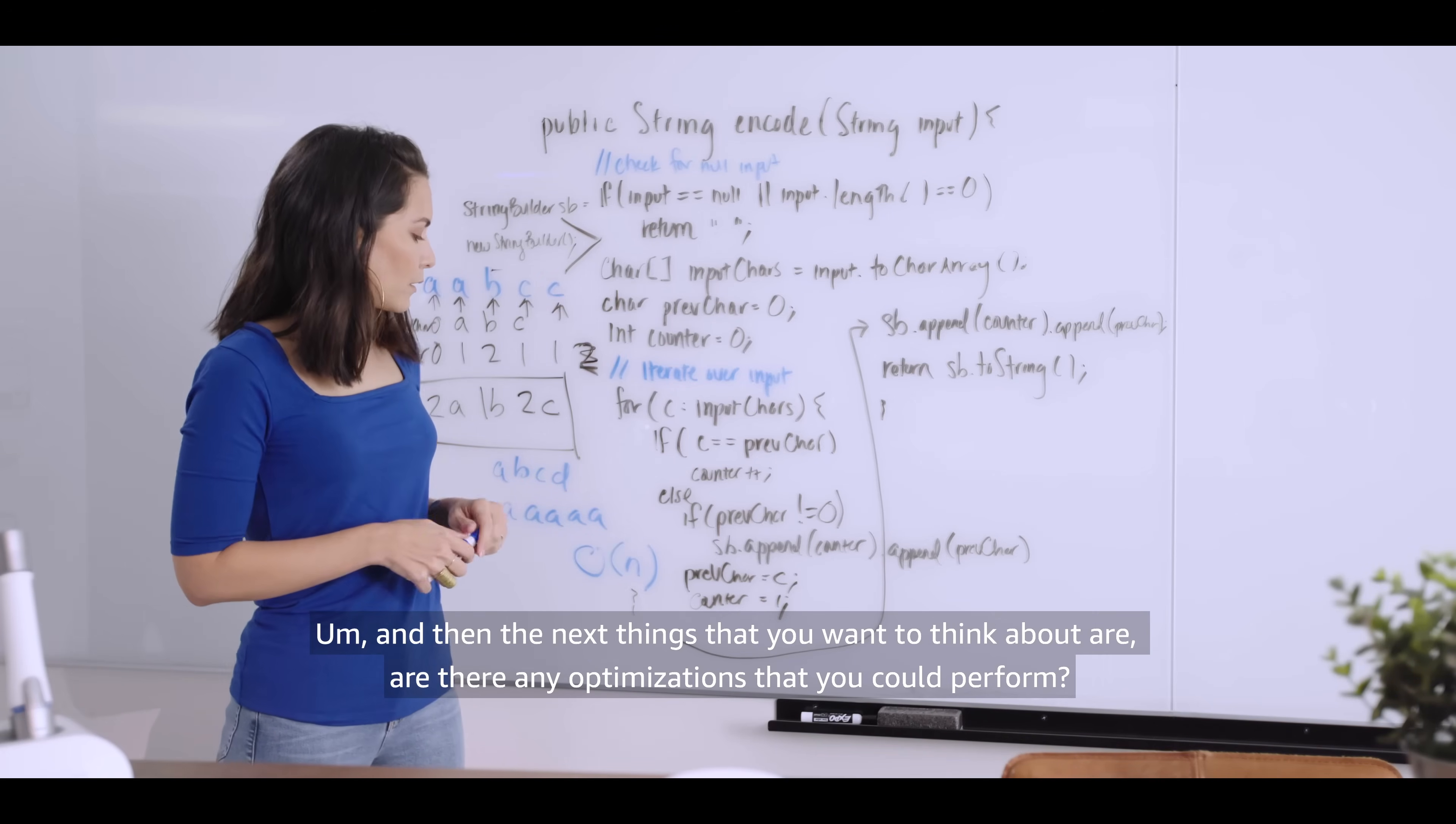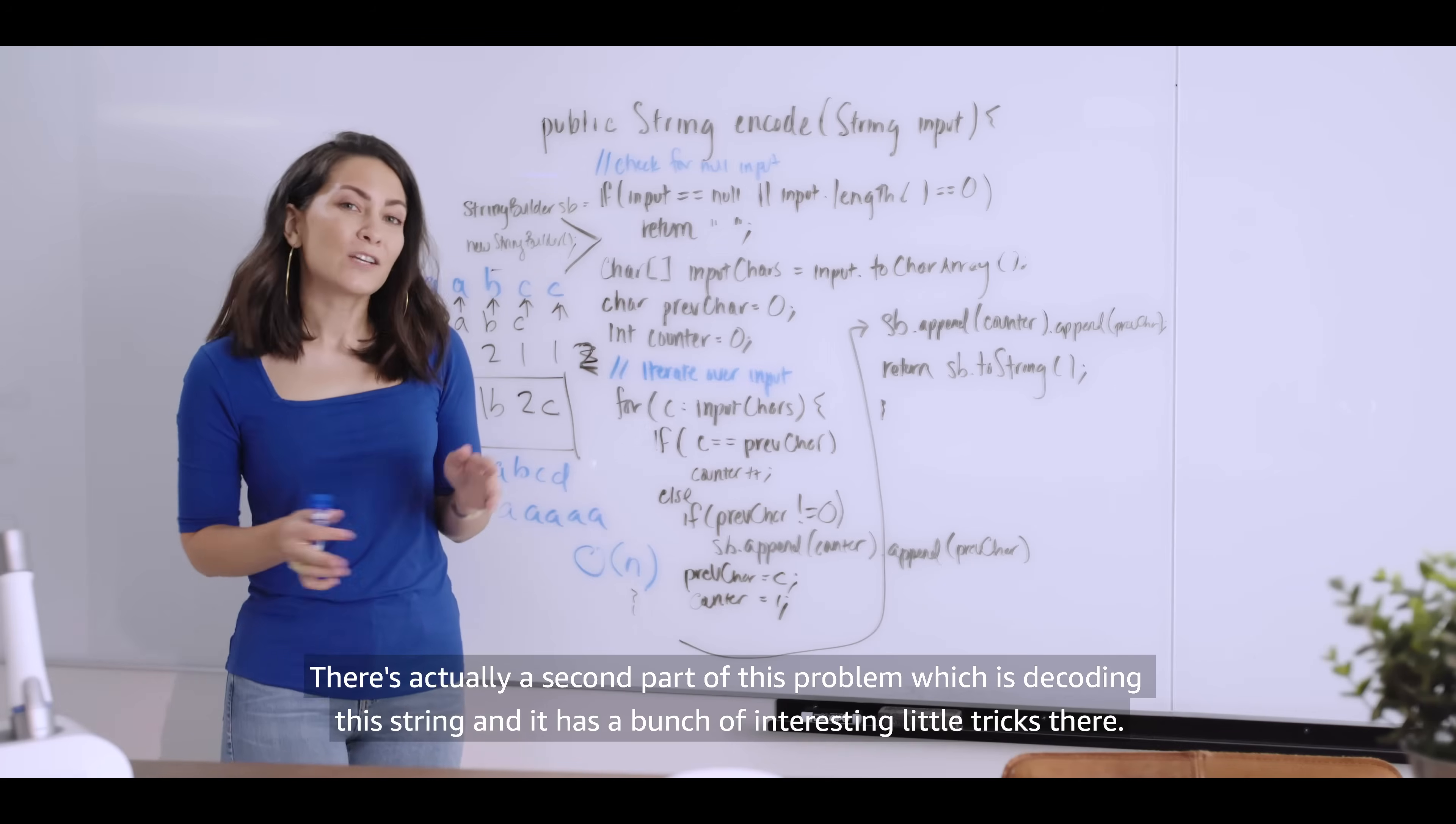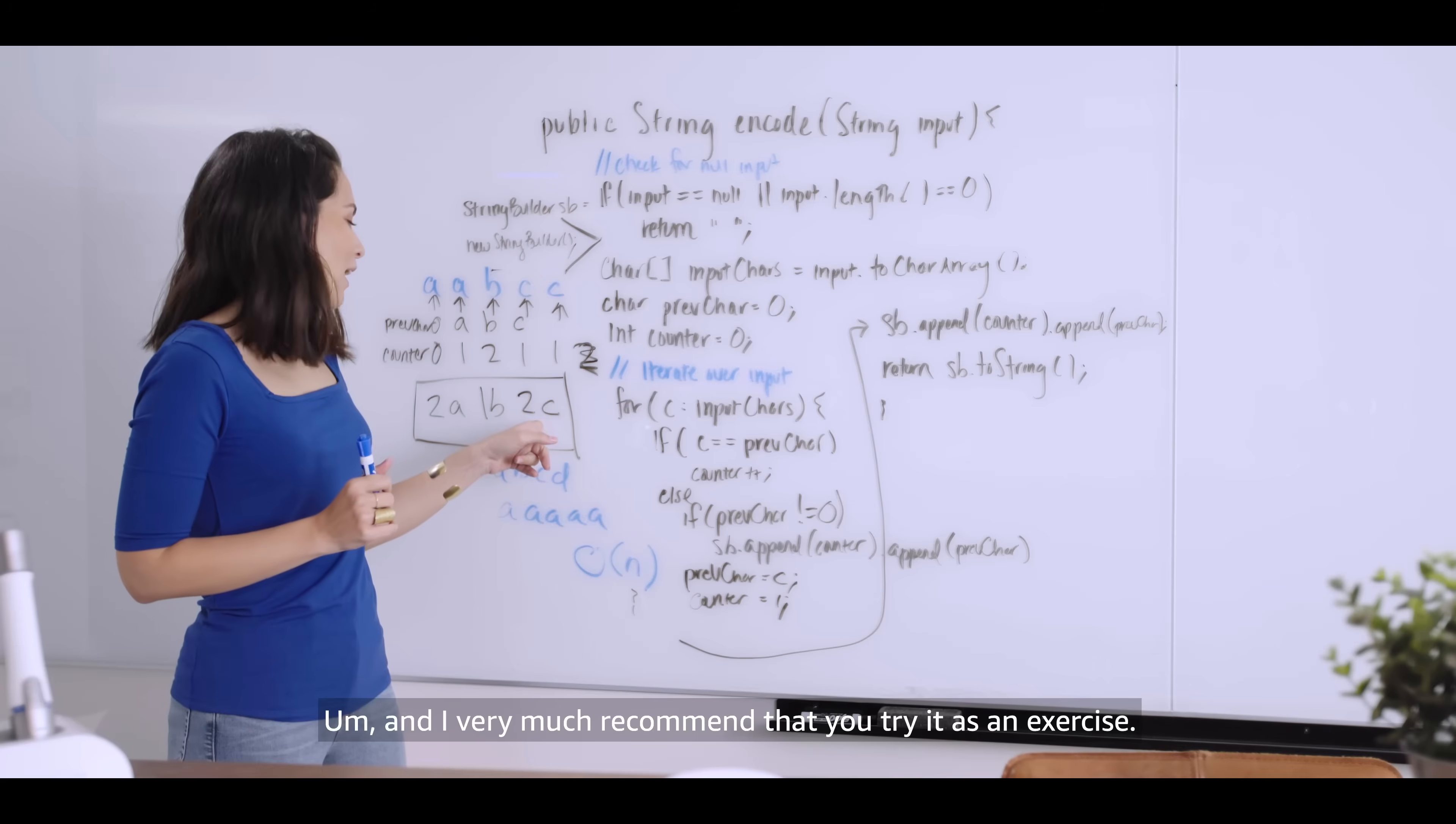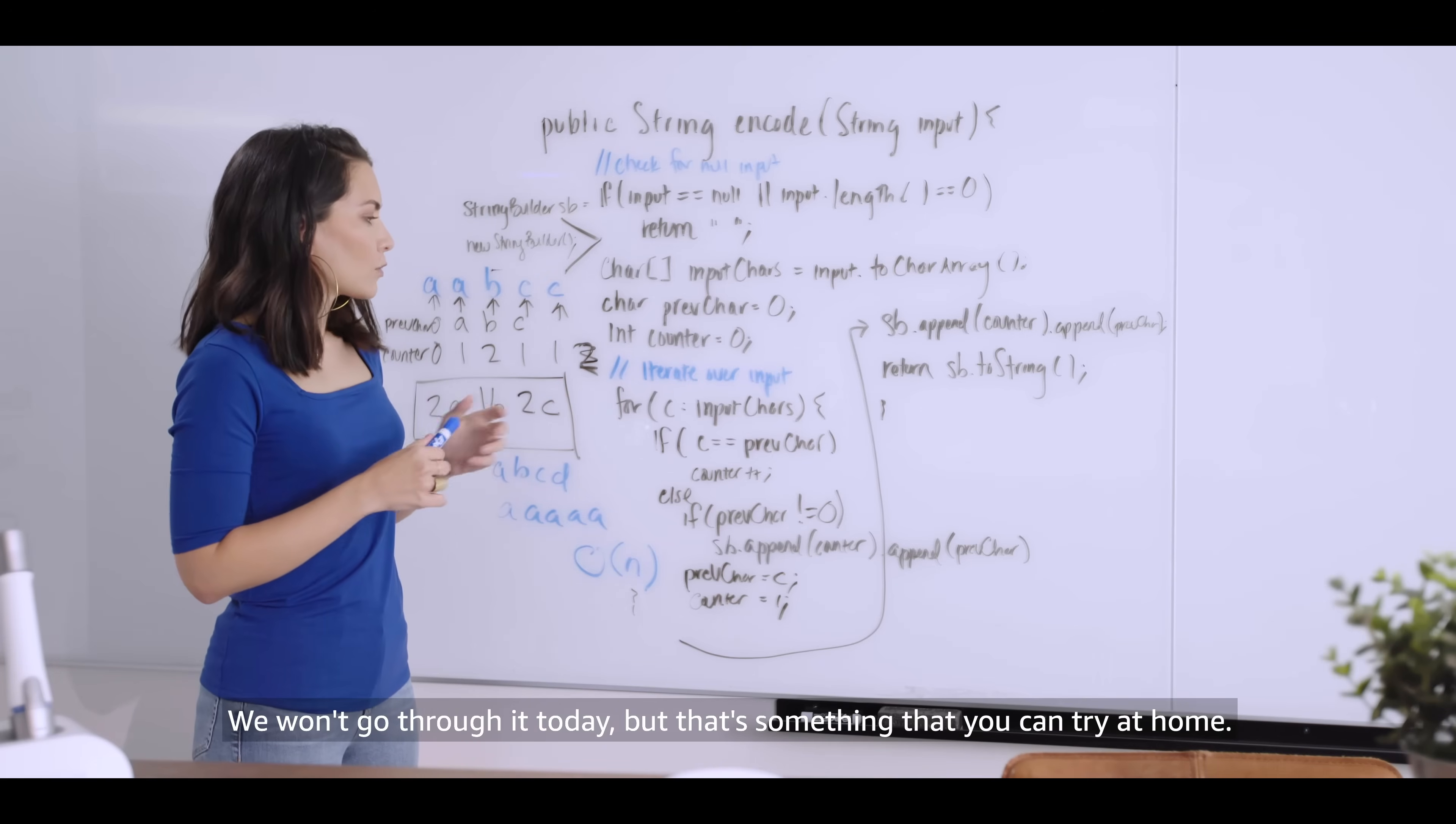And then the next things that you want to think about are, are there any optimizations that you could perform? Are there more optimal solutions that you can talk through? There's actually a second part of this problem, which is decoding this string. And it has a bunch of interesting little tricks there. And I very much recommend that you try it as an exercise. We won't go through it today, but that's something that you can try at home.